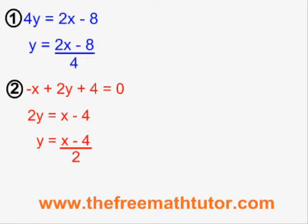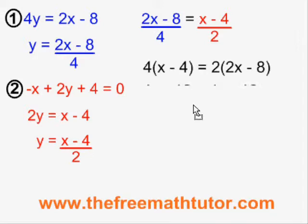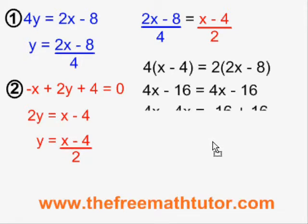I can set up my comparison now and cross multiply. 2x minus 8 over 4 is equal to x minus 4 over 2 cross multiplies to give me 4 times the bracket x minus 4 equals 2x minus 8. I get 4x minus 16 is equal to 4x minus 16, and I'm starting to see a pattern emerging here that indicates something special is going on.